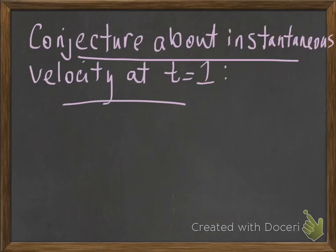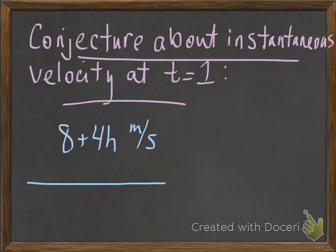Now, let's make a conjecture about the instantaneous velocity at time t equals 1. We've calculated average velocity on two different intervals. Can we guess what the instantaneous velocity should be at time t equals 1? My average velocity on the interval from 1 to 1 plus h is 8 plus 4h meters per second. And we saw that expression worked for both h being positive and h being negative.